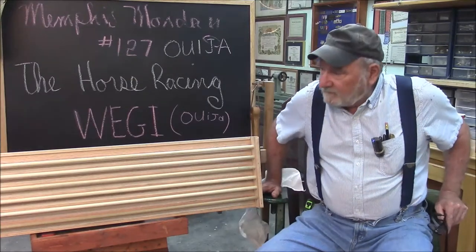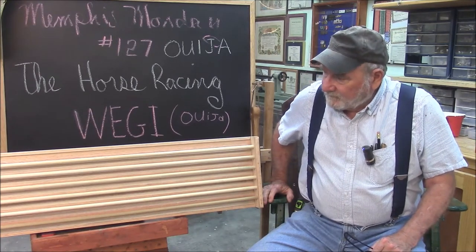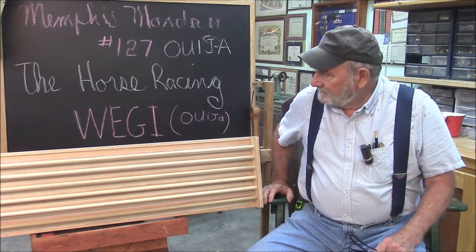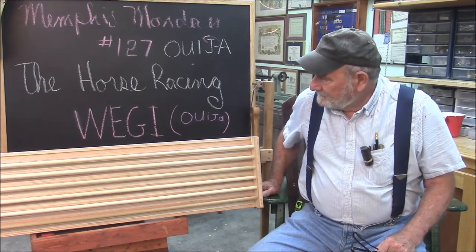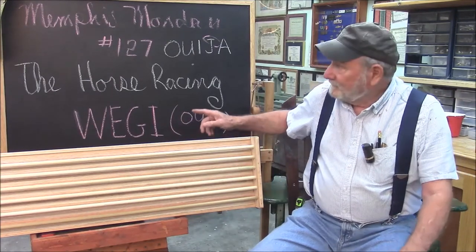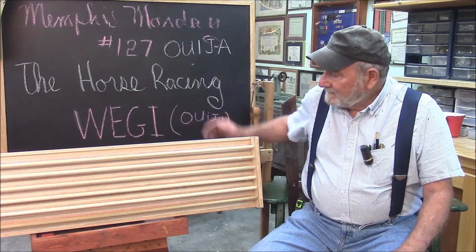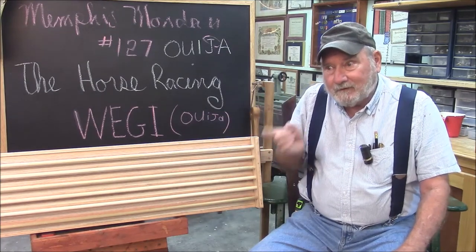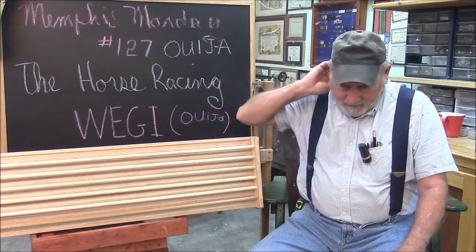There it is — the horse racing Ouija. It's a 100% wooden computer used to select the winners of horse racing. You probably noticed I spelled Ouija as W-E-G-I. If you google that, you'll find that's not how you spell it — it's O-U-I-J-A, pronounced Ouija. I'm going to put a link in the description to yesterday's video and get into the details of how you program this thing and how you pick winners for horse races.